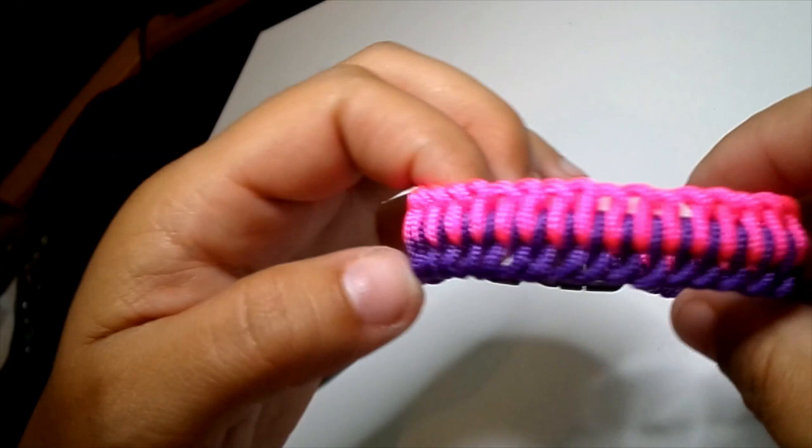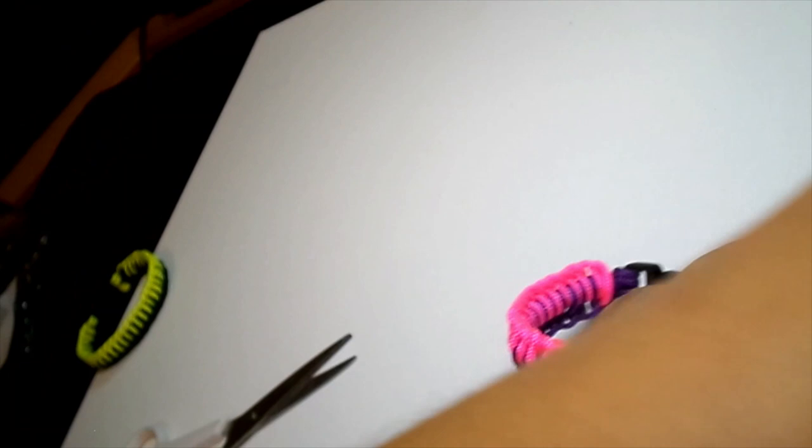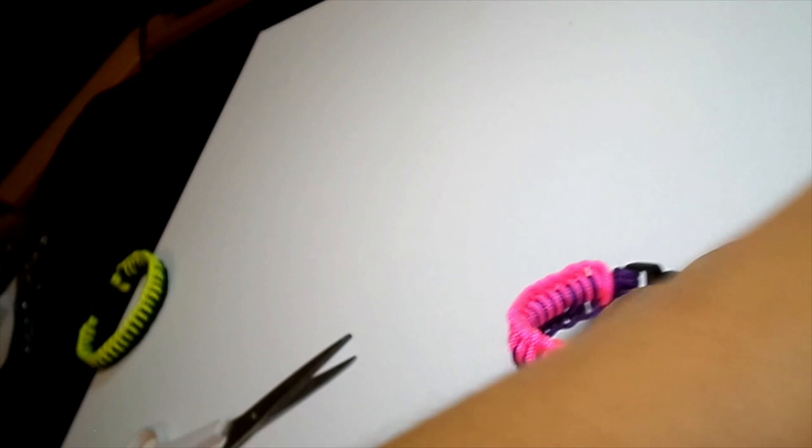So again, general rule, about one foot of paracord per inch. I usually try to do a little bit more just to be on the safe side, but you see this is about what I had left, so a little less than a foot or about a foot. So there you have it.